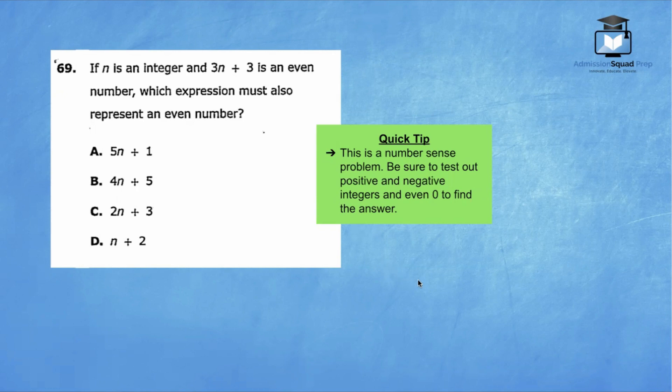Question number 69. If n is an integer and 3n plus 3 is an even number, which expression must also represent an even number? Let's come up with an example of what n can represent. We can test out n equals 2 and n equals 3 because the first piece of information we need to identify is if n is even or odd.